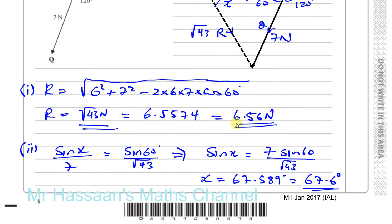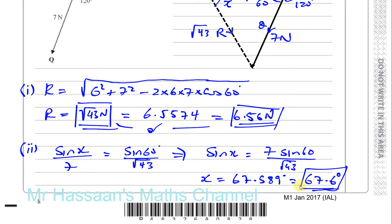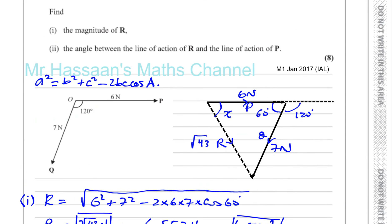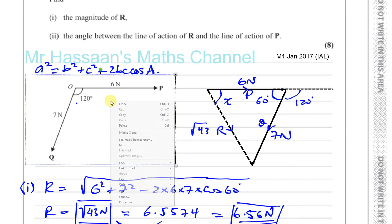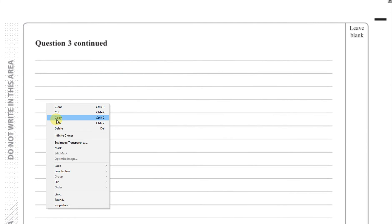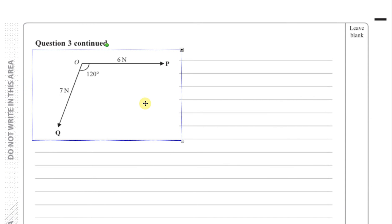So our two answers are 6.56 newtons and 67.6 degrees. The magnitude can also be written as root 43 N if preferred. That answers question number 3 from January 2017. Now, before closing, let me mention something important — it is possible to do this another way, and if there were more than two forces involved, you wouldn't be able to use a triangle.